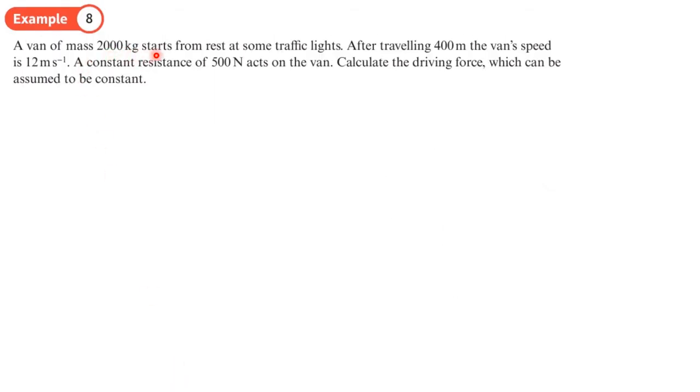A van of mass 2000 kilograms starts from rest at some traffic lights. After traveling 400 meters, the van's speed is 12 meters per second. A constant resistance of 500 newtons acts on the van. Calculate the driving force which can be assumed constant. I'm drawing a box representing the van with mass 2000 kg, driving force F, resistive force 500 newtons, starting from rest (u=0), reaching 12 meters per second over 400 meters.